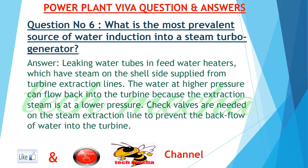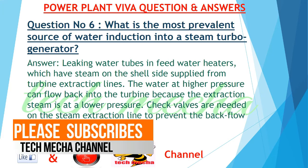Question number 6: What is the most prevalent source of water induction into a steam turbo generator? Leaking water tubes in feed water heaters, which have steam on the shell side supplied from turbine extraction lines. The water at higher pressure can flow back into the turbine because the extraction steam is at a lower pressure. Check valves are needed on the steam extraction line to prevent the backflow of water into the turbine.